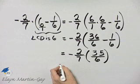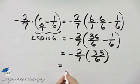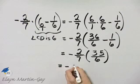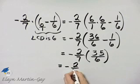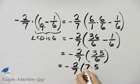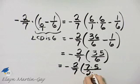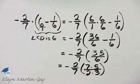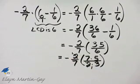And there are in fact some common factors. This is negative 2 over 7. 35 I'll write as 7 times 5. 6 I'll write as 2 times 3. Why? You can see that common factor of 2.